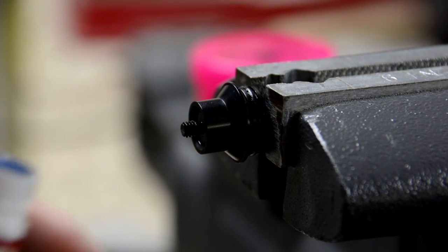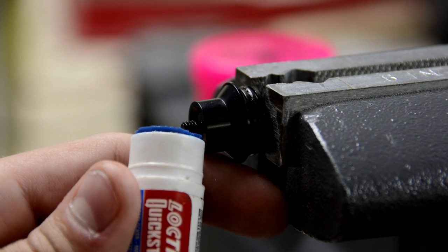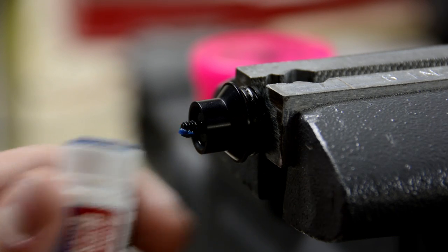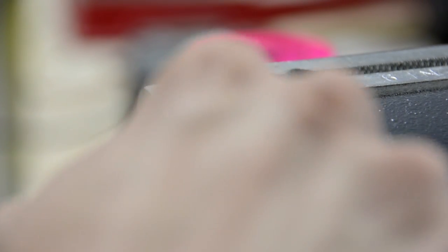Then we're going to apply our blue thread locker—you just need a little bit—and then wipe off the excess. Then we're going to screw back on the cap and make sure it's hand tight, and that's pretty much it. You're good to go.